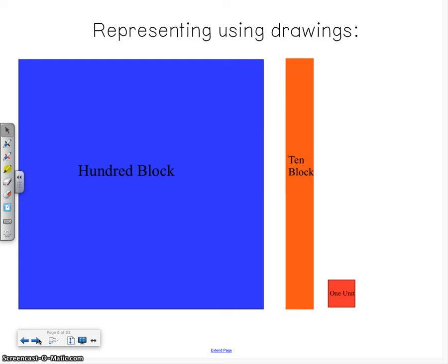When we are representing place value drawings you can see that we use the 10s stick just like we did in our dot drawing, and then a 1s cube just like we did in our dot drawing as well. But when we get to 100 we need a quicker method as well, so we can use a square to represent 100. So if I were interpreting this picture here, I have one 100s block, one 10s stick, and one 1s cube for the number 111.